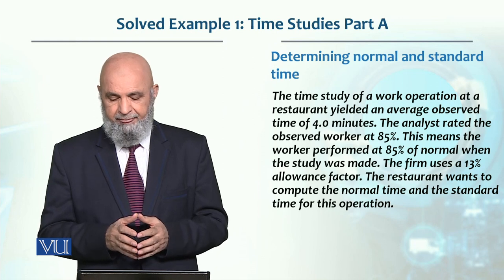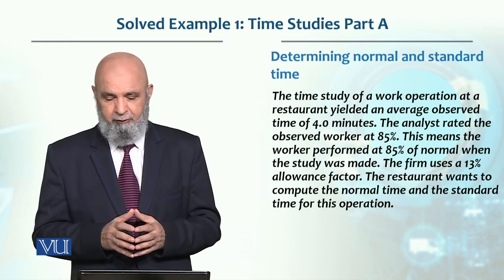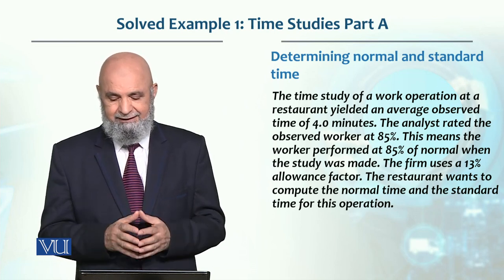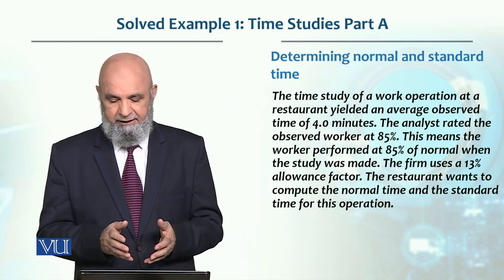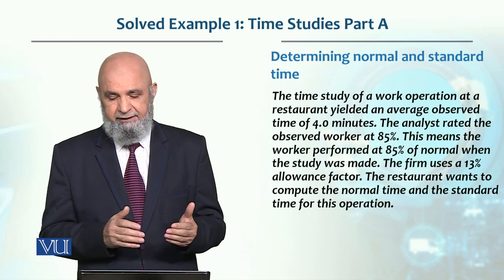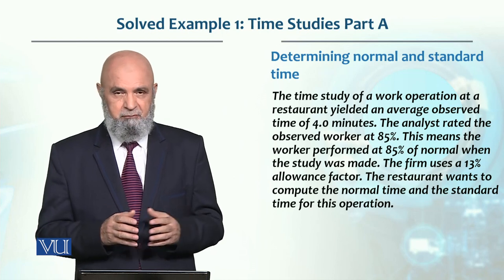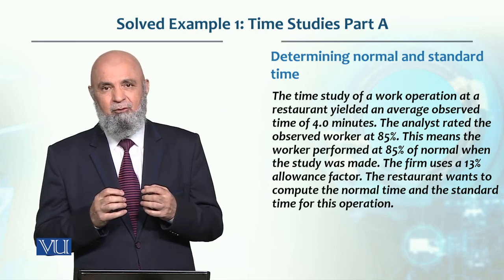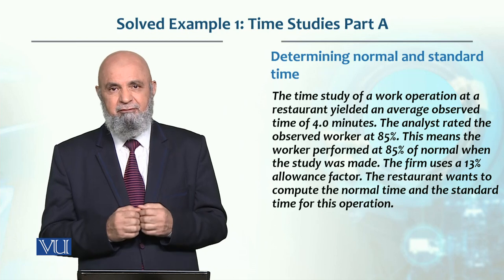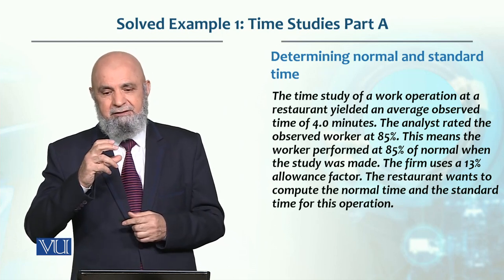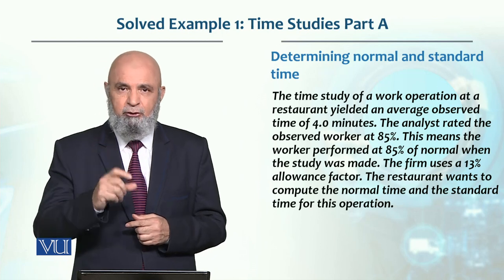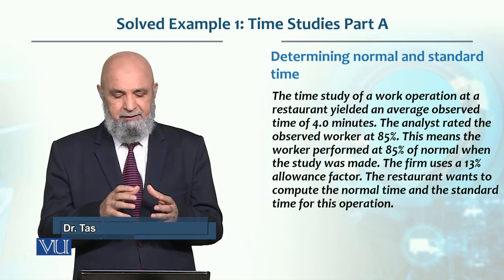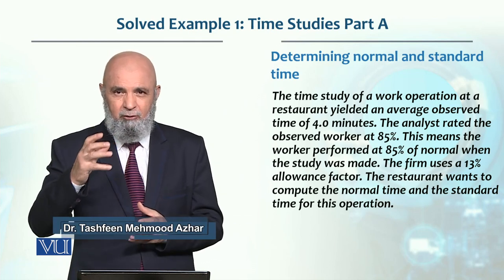A task is performed and the average observed time is 4 minutes. The analyst rated the worker at 85%. That means the worker was 85% normal — the worker was slow compared to an average worker. So this means we have to calculate the normal time accordingly.